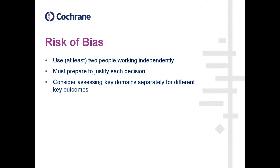You should also consider whether it's appropriate to look at key risk of bias domains separately for different key outcomes. For example, consider an outcome like depression. If a person is not blinded and knows they have been receiving an intervention meant to treat depression, there is a good chance that will affect their outcome — they could experience a placebo effect and think their depression has improved just because they know they received the intervention.